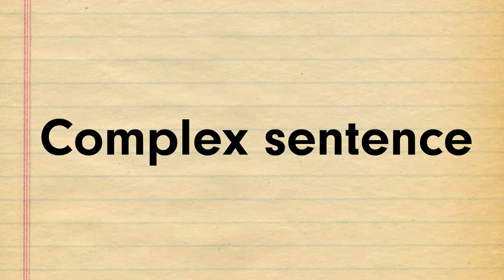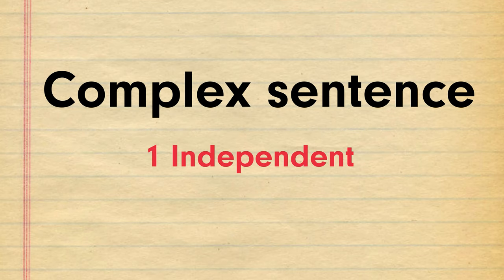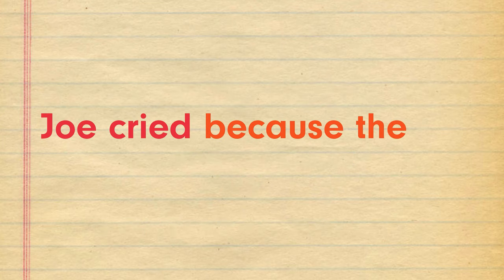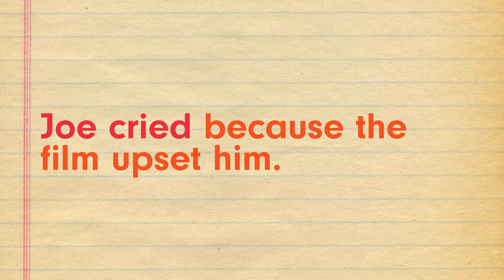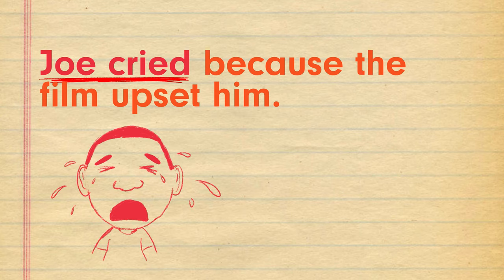The next type of sentence is a complex sentence. These are made up by combining one independent clause with one or more dependent clauses. This may look like 'Joe cried because the film upset him.' By using the connective 'because,' we can see that this sentence has two parts. The first part, 'Joe cried,' is the independent clause.